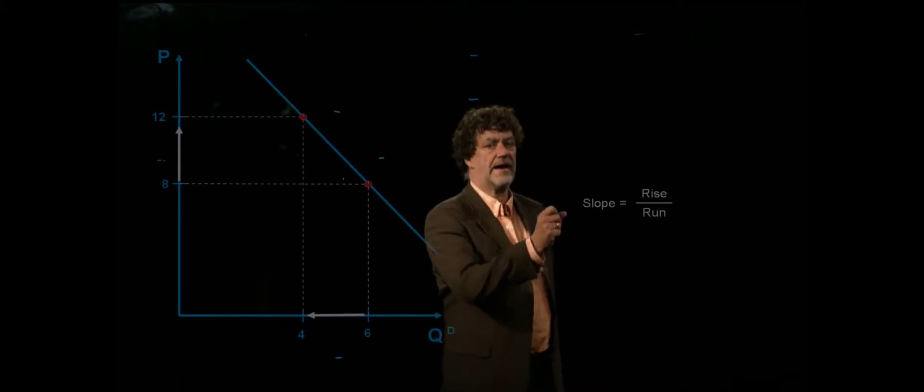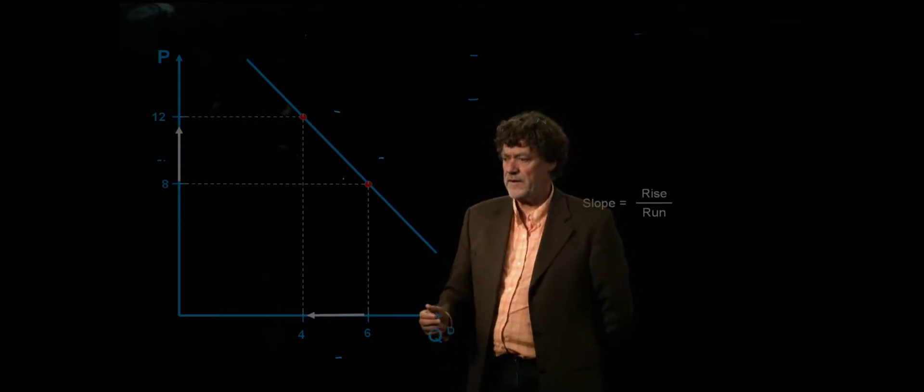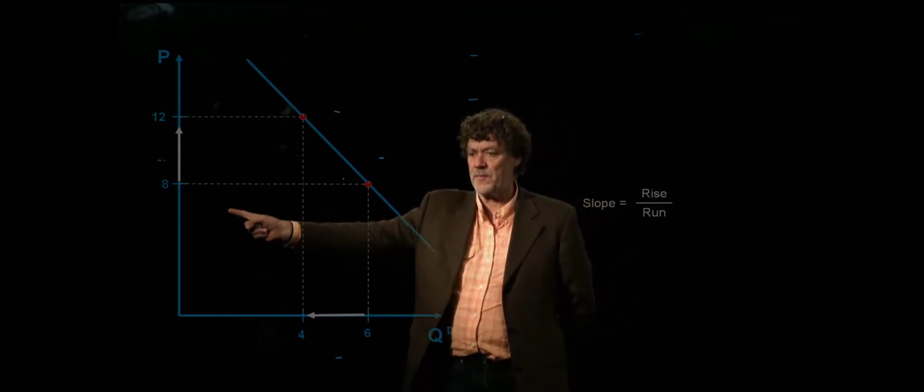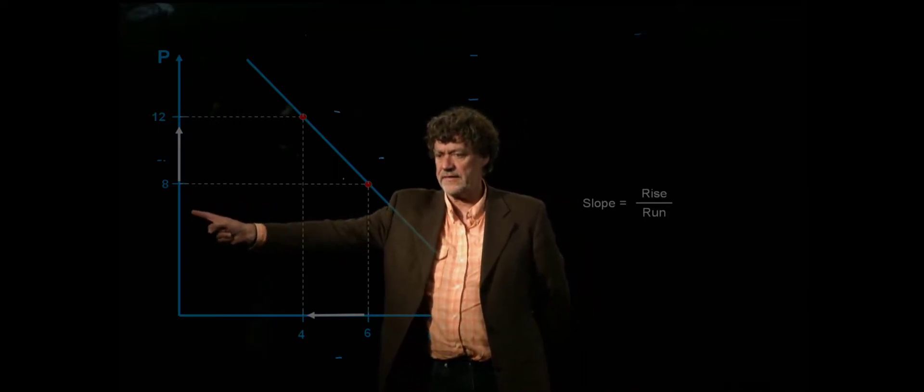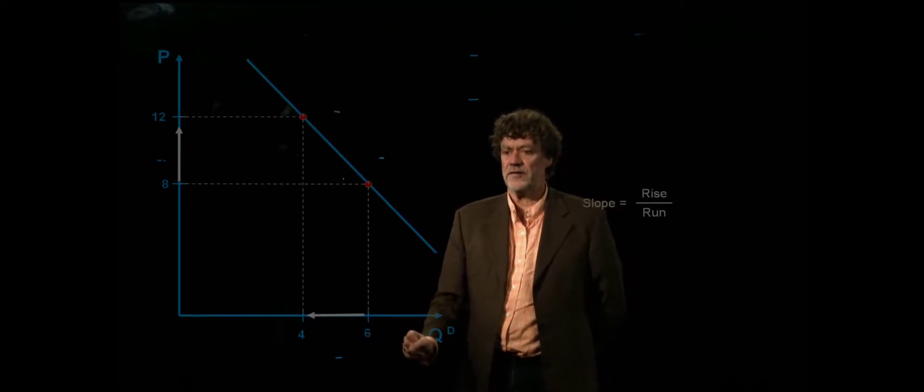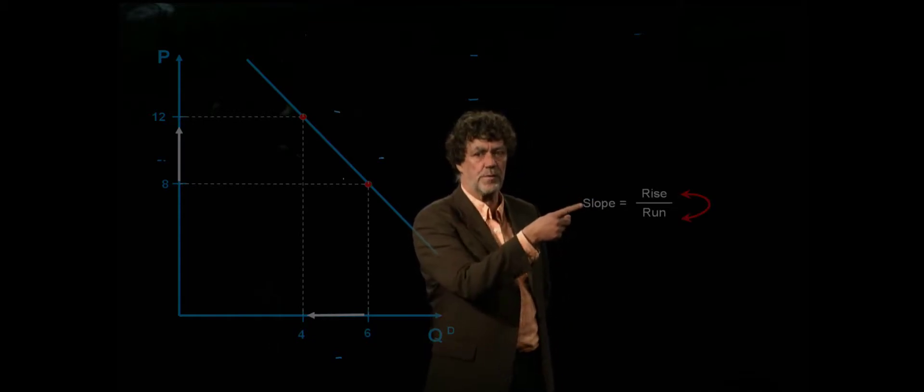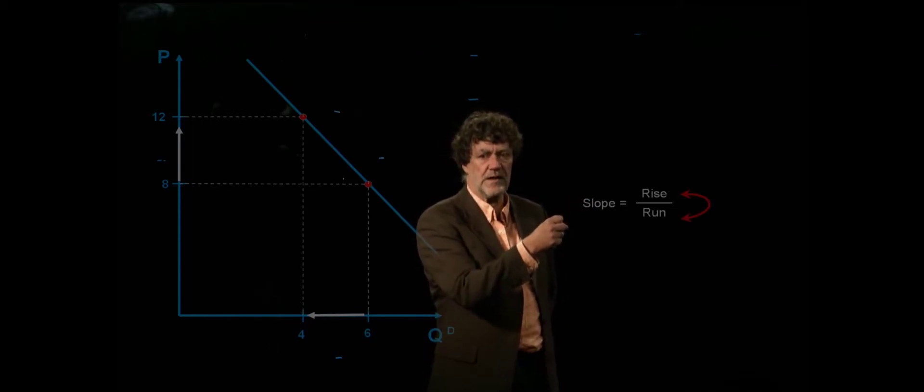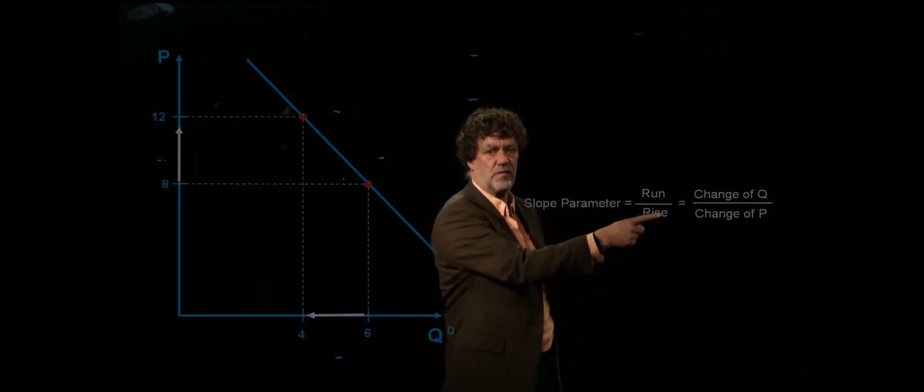In school you learned that slope is rise over run. In economics we have a problem. The problem is that in economics we exchange the axis in the market diagram. The independent variable is on the vertical axis, while the dependent variable is on the horizontal axis. Consequently we have to change how we interpret the slope. The new slope would be run over rise, so the change of quantity over the change of price.